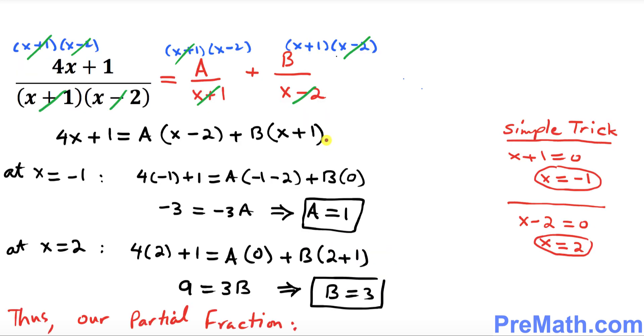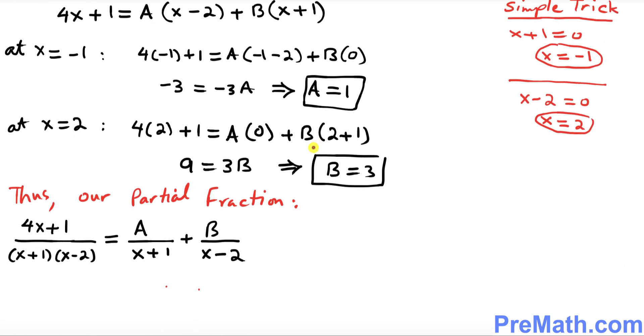Thus, our complete partial fraction is simply by replacing A by 1 and B by 3. Thus our complete answer is 1 over (x plus 1) plus 3 over (x minus 2). And that is our complete answer. Thanks for watching and please subscribe to my channel for more exciting videos.